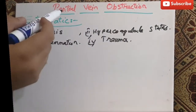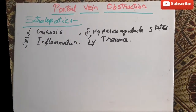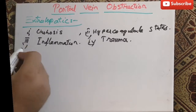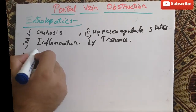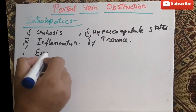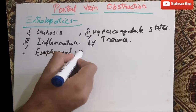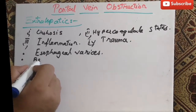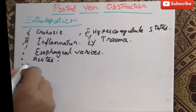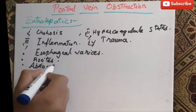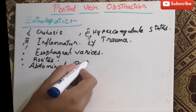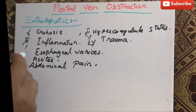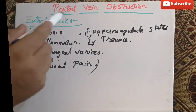These are the causes due to which portal vein obstruction can occur. When extrahepatic portal vein obstruction occurs, we can see esophageal varices. We can also see ascites and abdominal pain. These are the clinical features of extrahepatic portal vein obstruction.